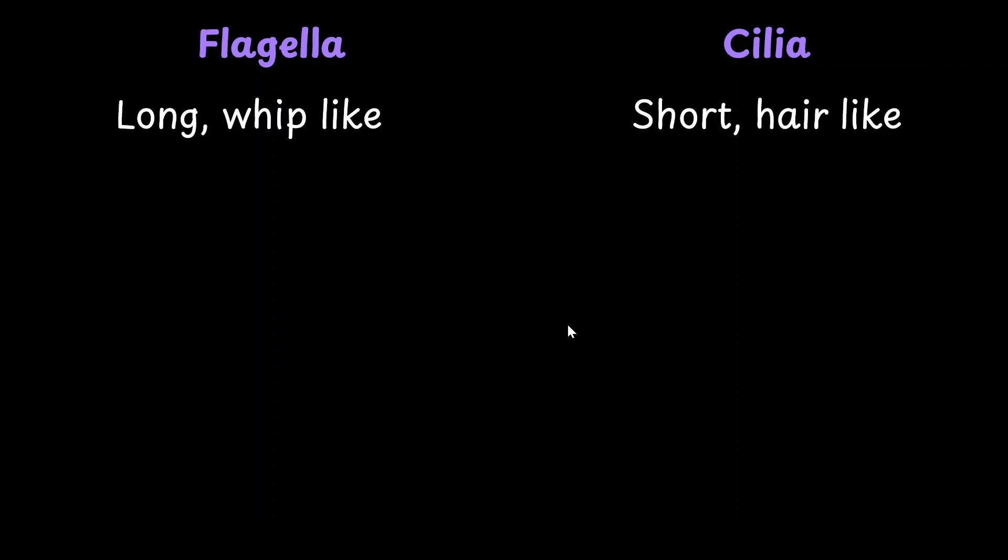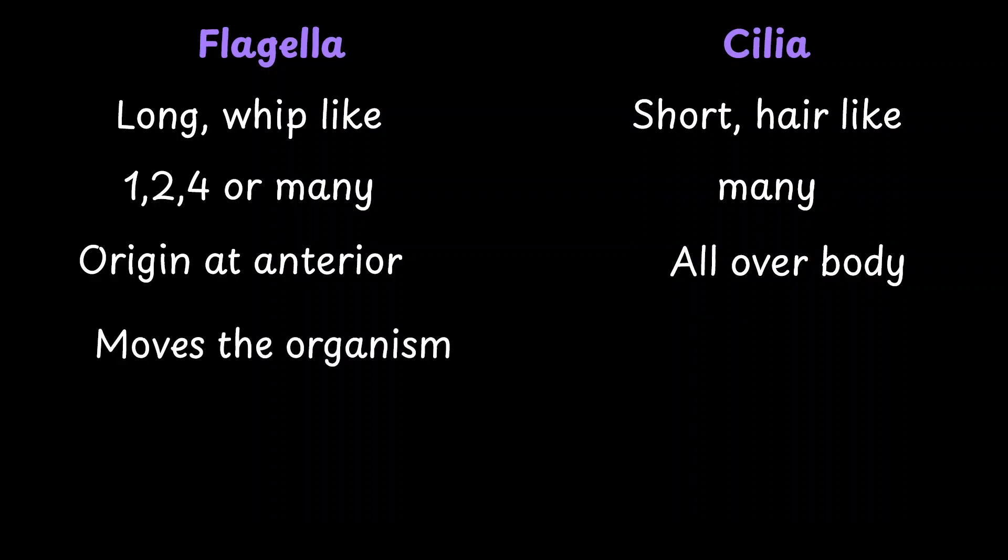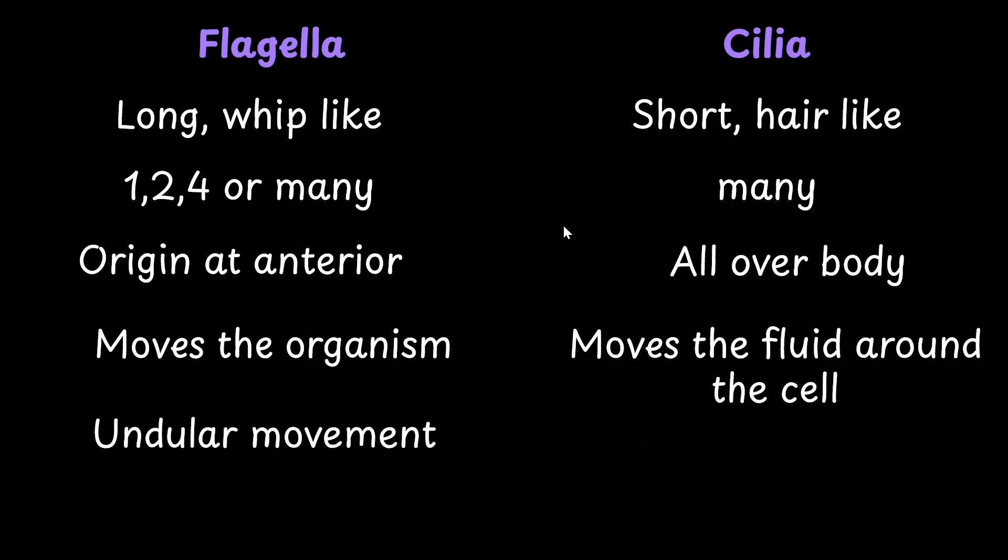Now that we have looked at flagellar and ciliary movement, let's compare them. Flagella is long like a whip, whereas cilia are short and hair-like. Flagella could be few or many, but cilia is mostly always many. Flagella is usually found at the anterior end of the organism, but cilia is found all over its body. Flagella primarily helps in moving the organism, whereas cilia helps in moving the fluid that is around the organism. Flagella shows undular movement, whereas cilia shows pendular movement.